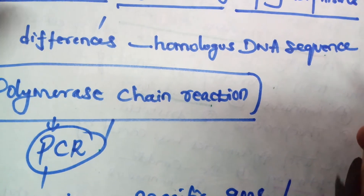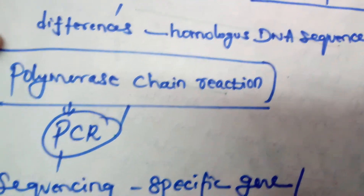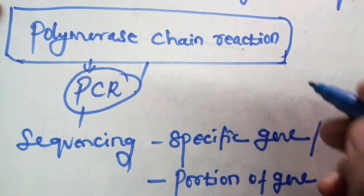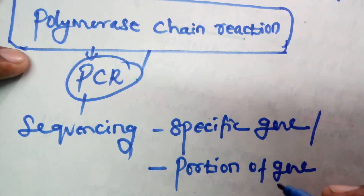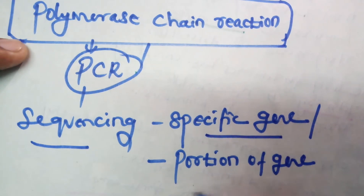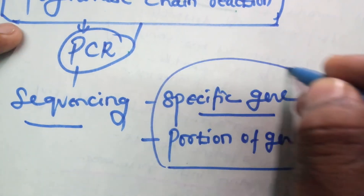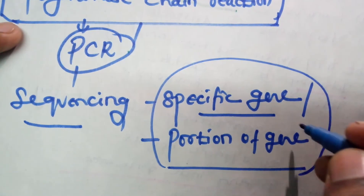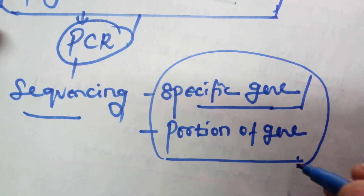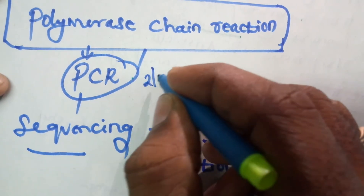Restriction Fragment Length Polymorphism. Polymerase Chain Reaction, the famous PCR technique, is used for sequencing a specific gene or a portion of a gene. PCR amplifies one particular gene. This is a one-mark and two-mark topic.